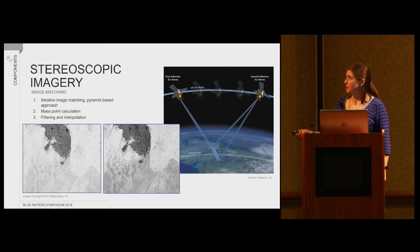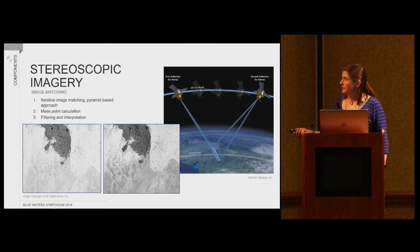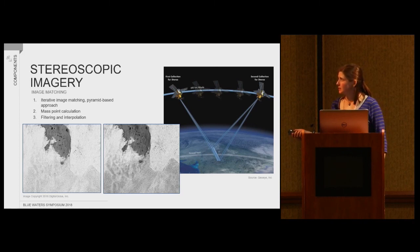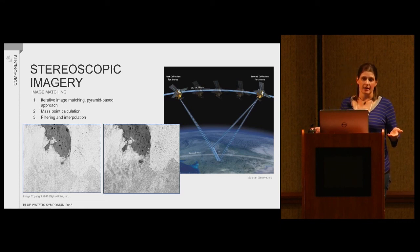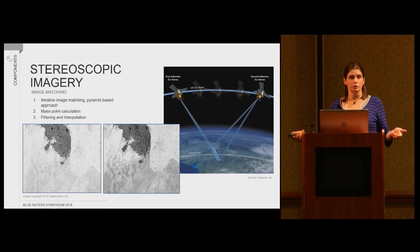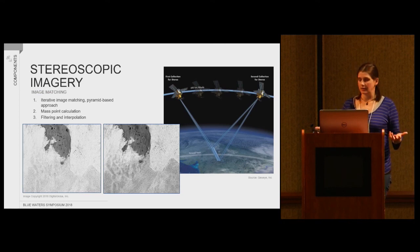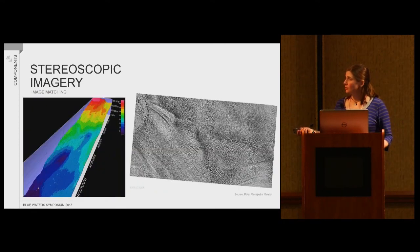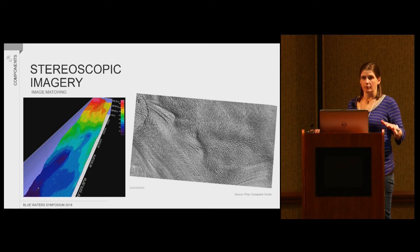Then the terrain extraction tools take the differences between these two images, find the point on each that represents the same place — so this end of this peninsula here and the end of this peninsula there — back out from the satellite sensor model the exact location on earth for these two points, assuming that they were shot straight down. Then you can back out the elevation for that given point, and essentially the algorithm does this for every point on the image on a set grid. You end up with what we call mass points — essentially XYZ points all in a regular grid.